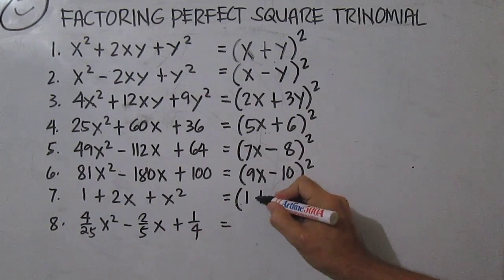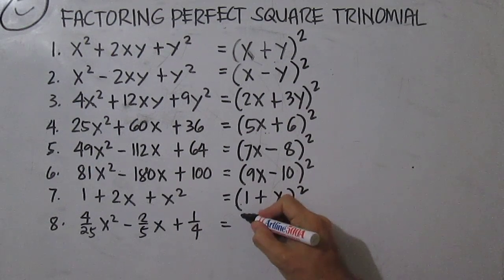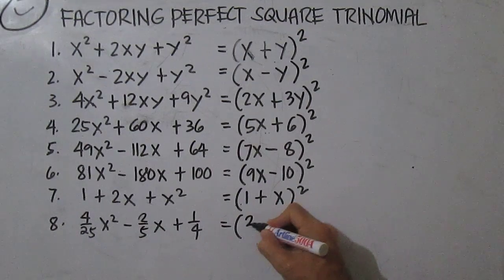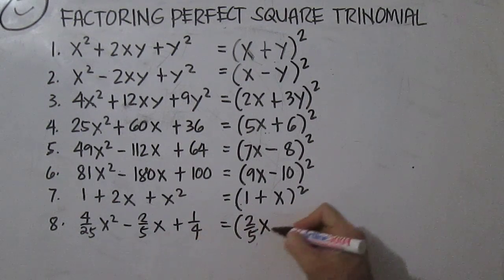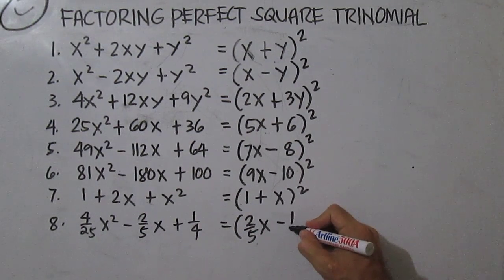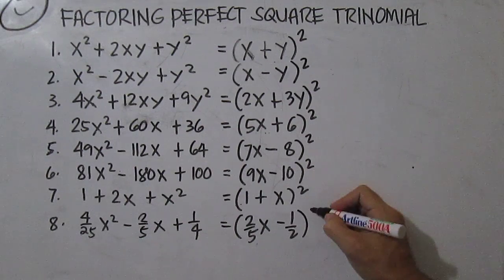1 is 1, plus the square root of x squared is x, then square it. For number eight, the square root of 4 over 25x squared is 2 over 5x, minus the square root of 1/4 is 1/2, then squared.